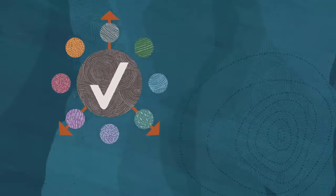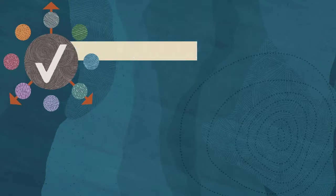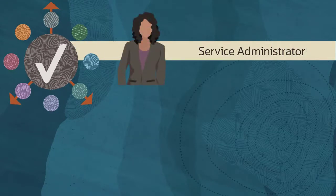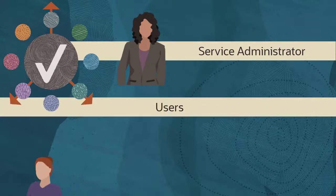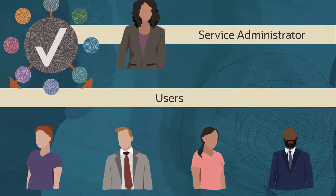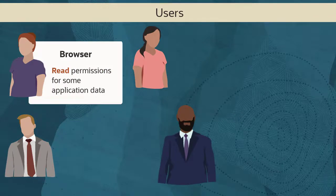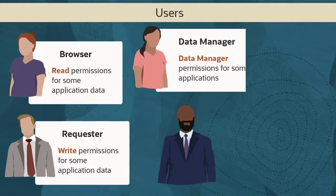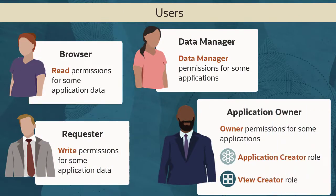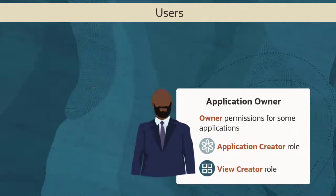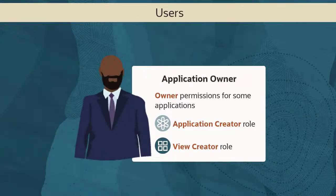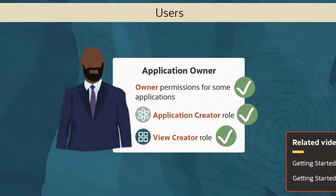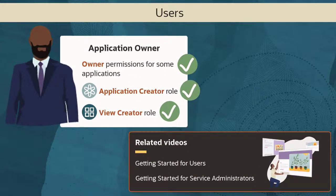In Enterprise Data Management Cloud, service administrators administer the entire service and have full access to all service data. Everyone else is a user. Allowed actions and data access for users are controlled by assigning a combination of application roles and data permissions. In this overview, we'll show you what you can do as a user with a combination of owner permissions and creator roles. To get started with tasks for other types of users, see our related overviews.